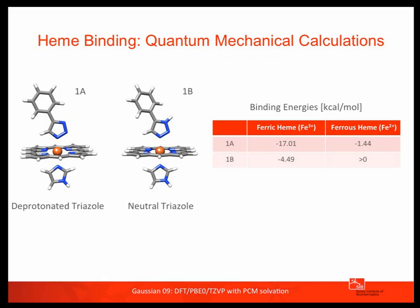In order to really calculate binding energies between the small molecule and the heme cofactor, you need quantum mechanical methods. So we turned to this approach. The binding strength is strongly modulated by the identity of the compound — the deprotonated compound binding to the oxidized form of the protein gives the best binding energy. Our calculations showed that electronic effects strongly modulate ligand binding strength. And the answer to whether this can be observed experimentally is yes.